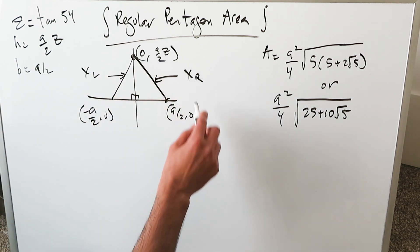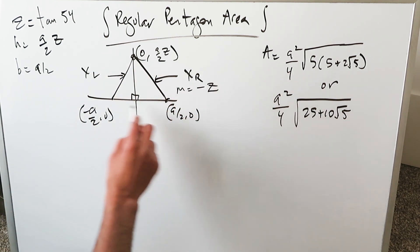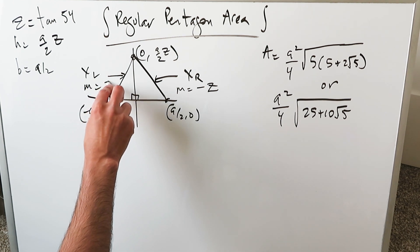You know how to do the slope and the line determinations. This is your point. These are your points. Here the slope is going to be minus Z. Here the slope is going to be positive Z.